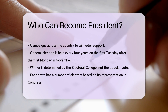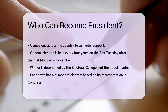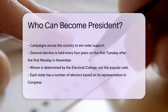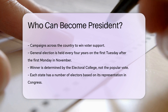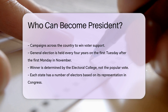Once nominated, the candidate campaigns across the country to win the support of voters. The general election is held every four years on the first Tuesday after the first Monday in November. The winner of the election is determined by the Electoral College, not the popular vote.